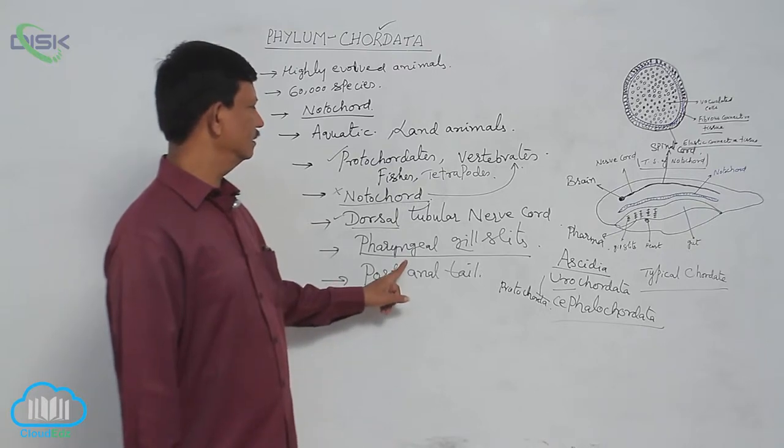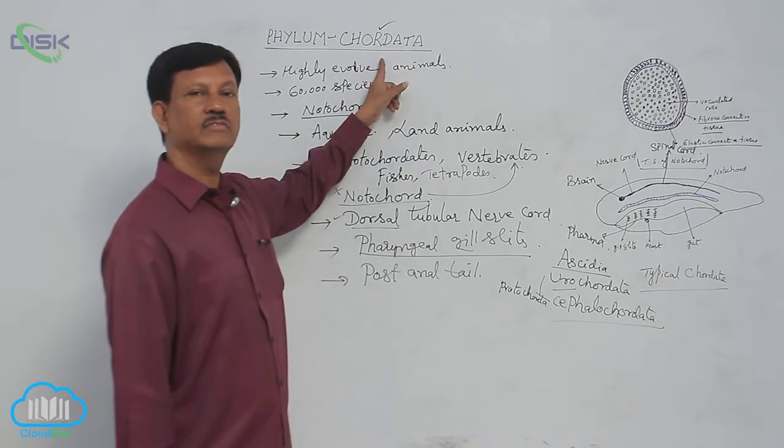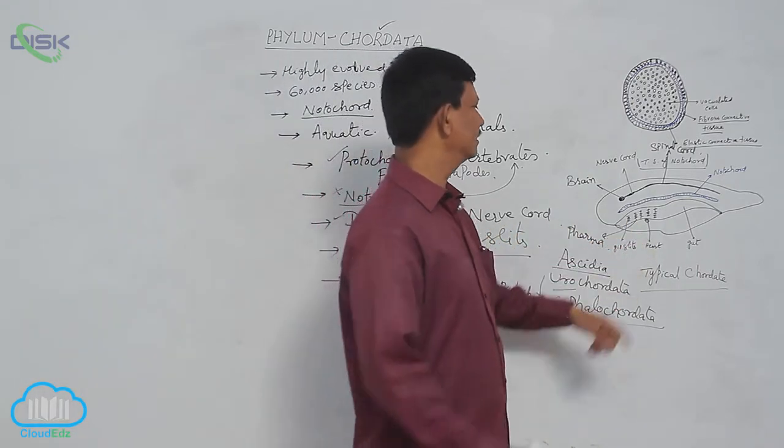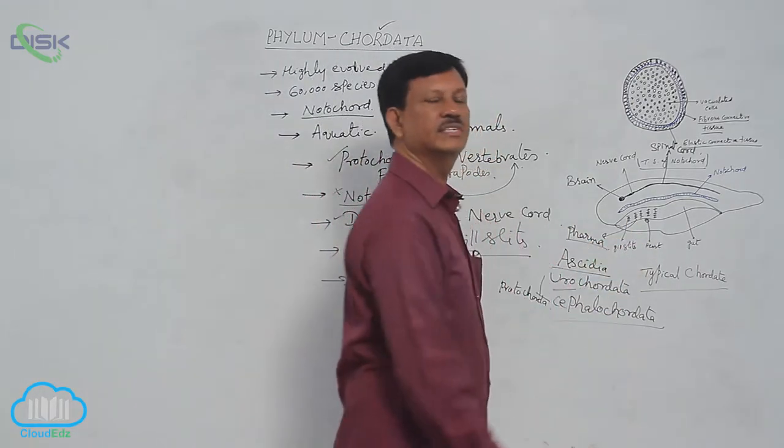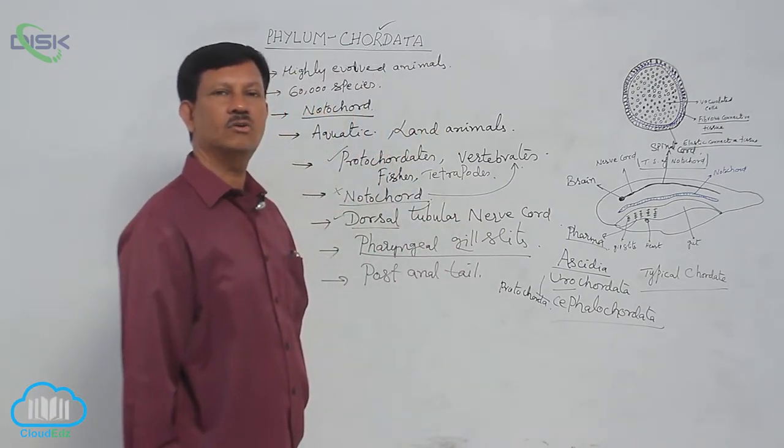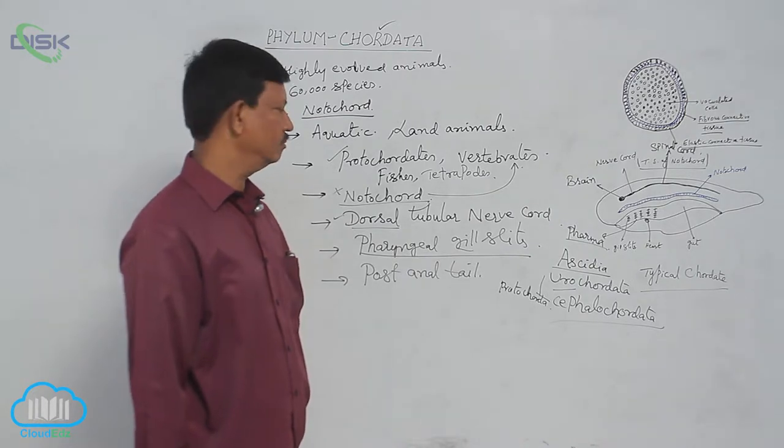Pharyngeal gill slits are an important character of chordata. In chordates they are situated in the pharynx region. Their main function is respiration. They take oxygen from the water and liberate carbon dioxide.